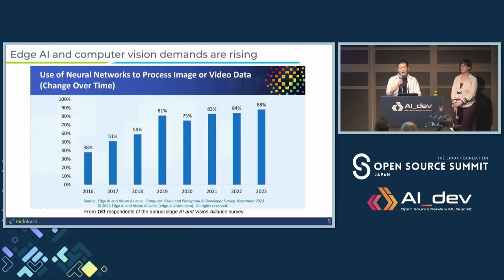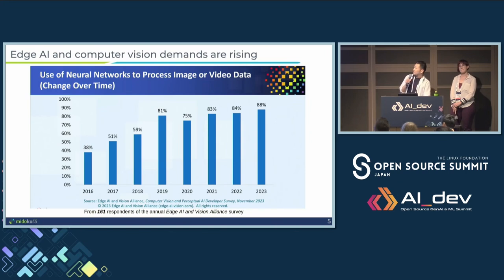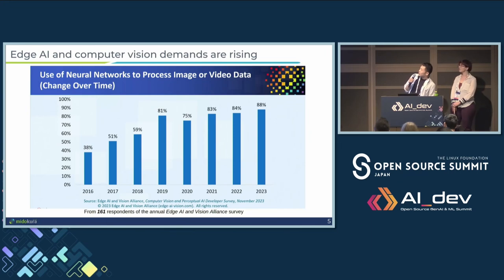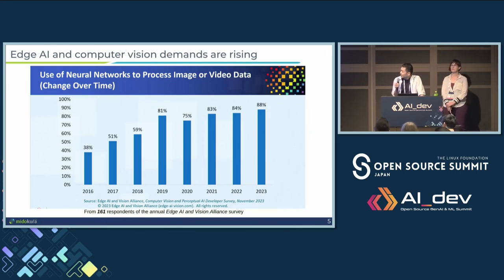How common is AI at the edge, in particular for vision sensing data? We are a member of the Edge AI and Vision Alliance, and every year they do a survey. One of the questions is about the use of neural networks at the edge. As you can see, in less than 10 years, usage went from less than 40% to almost 90%. This is becoming the norm.